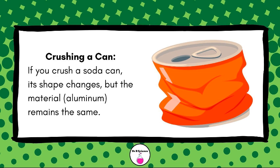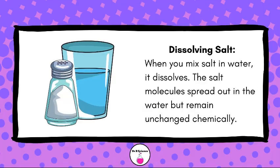Crushing a Can: If you crush a soda can, its shape changes, but the material — aluminum — remains the same. Dissolving Salt: When you mix salt in water, it dissolves. The salt molecules spread out in the water but remain unchanged chemically.